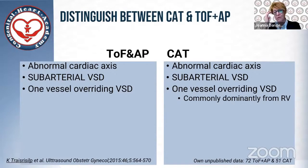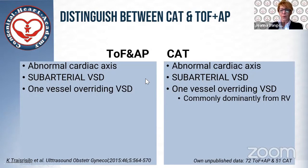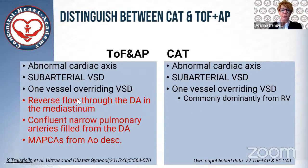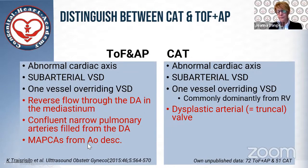Based on our unpublished data on common arterial trunk, in all cases on both occasions we had abnormal cardiac axis, subarterial VSD, and one vessel overriding VSD. In common arterial trunk, more commonly the aorta dominantly came from the right ventricle, not just entirely over the VSD. In pulmonary atresia, we should have reverse flow through the ductus arteriosus in the mediastinum, and we should see confluent central pulmonary arteries. We can find collaterals — not always, but we should search for them in both lesions. In common arterial trunk, if we have insufficiency and a slightly dysplastic valve, it most probably is the truncal valve — which was the main reason we mixed both diagnoses in this case.